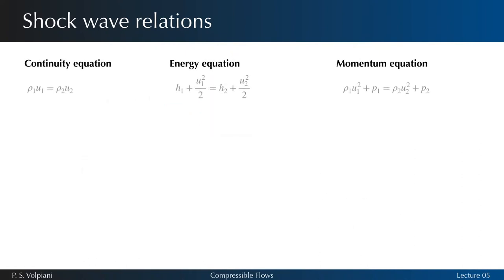The basic one-dimensional compressible flow equations can be written as follows. Taking the perfect gas equation of state P equals rho RT and expressing the velocity as the Mach number times the speed of sound, we can modify the continuity equation and write the following expression.